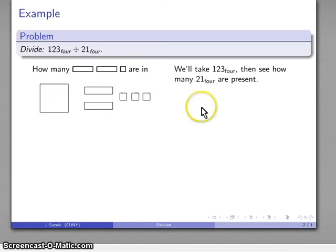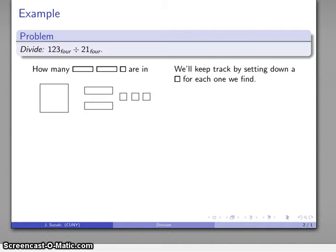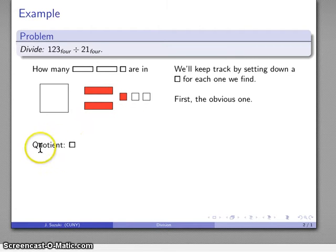So the question: how many two-ones are in one-two-three? And I'll keep track - arithmetic is bookkeeping - I'll keep track by setting down a unit for each of these two-ones that I find in my dividend. So there's an obvious two-one right there. So here's a two-one, and so far my quotient, well I found one of them. And let's see if I can find any more. Well, I found one piece and I cut one piece for the cake and I gave it out, and well, everybody else who came later, tough luck.